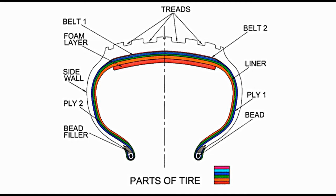Belt. This is made of steel cords with rubber impregnated. It forms a layer in the tyre structure and provides stability to the tread area. It is located above the ply. As can be seen in the diagram, there are two belts — belt 1 in cyan colour and belt 2 in magenta colour.